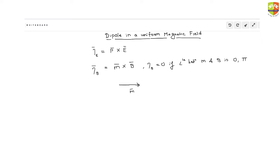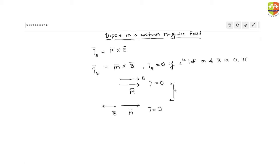For example, consider a magnetic dipole moment m — it could be due to a solenoid, a bar magnet, whatever — ultimately it is m. If you have a magnetic field along the same direction as m, torque will be zero. Similarly, if the magnetic dipole moment is antiparallel to the magnetic field B, torque will again be zero. So what is the difference between these two scenarios?